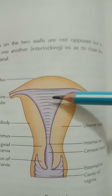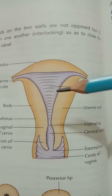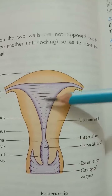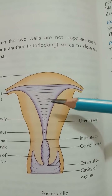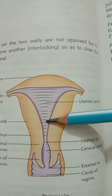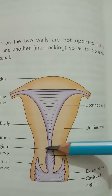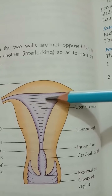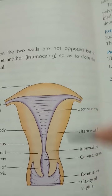The cavity of the uterus is small relative to its size due to its thick muscular wall. It is divided into the cavity of the body and the cavity of the cervix. The cavity of the body, or uterine cavity proper, is triangular in coronal section. The apex of the cavity is continuous below with the cervical canal through the internal os. Implantation of the developing embryo commonly occurs in the upper part of the posterior wall of this cavity.